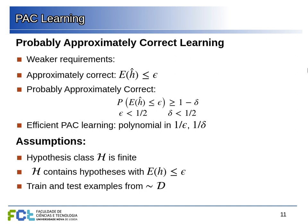We assume here that the hypothesis class is finite and that inside it there is at least one hypothesis for which the true error is no larger than epsilon. All training examples are drawn with the same probability distribution. Given these goals and assumptions, what can we say about the relationship between the size of the training set, the probability of getting something approximately correct, and how approximately correct we can get it?